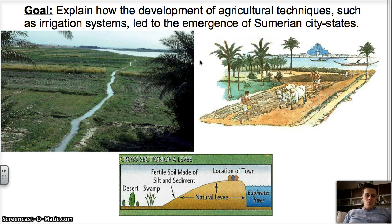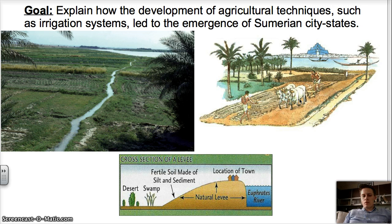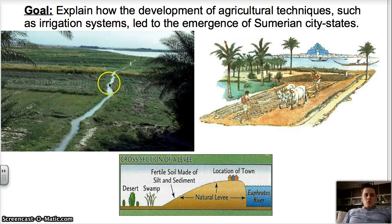What we're going to talk about most importantly is the irrigation system. I'm also going to discuss levees and the plow, because these are some developments that come out of ancient Sumer that are very important. Let's take a look at this irrigation system.